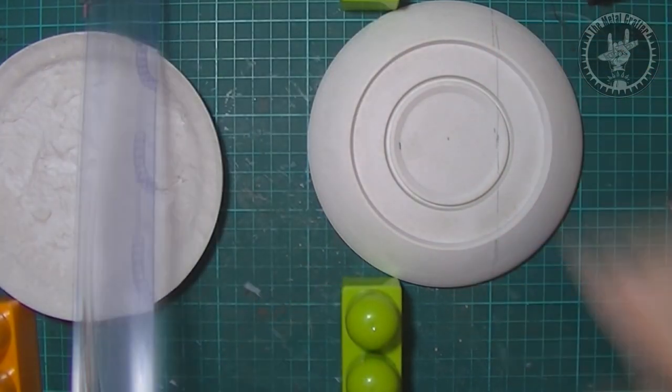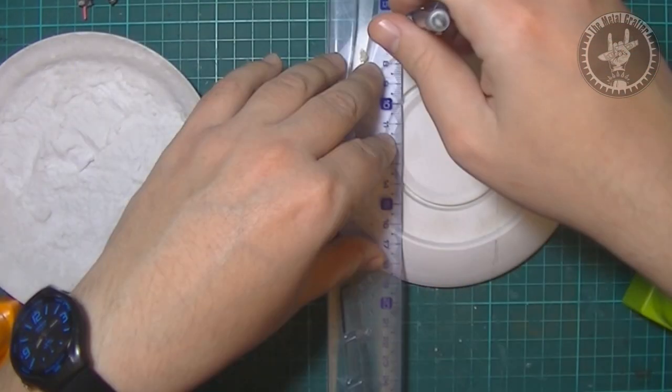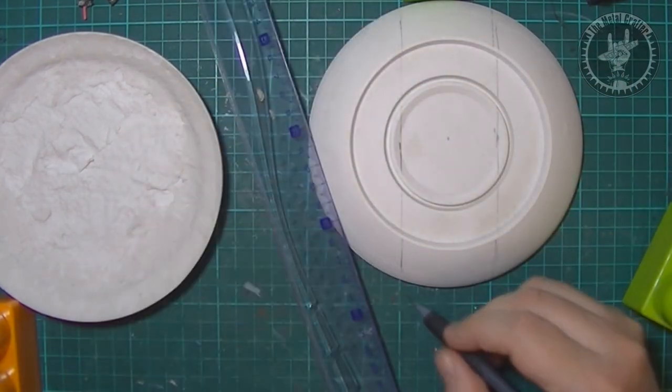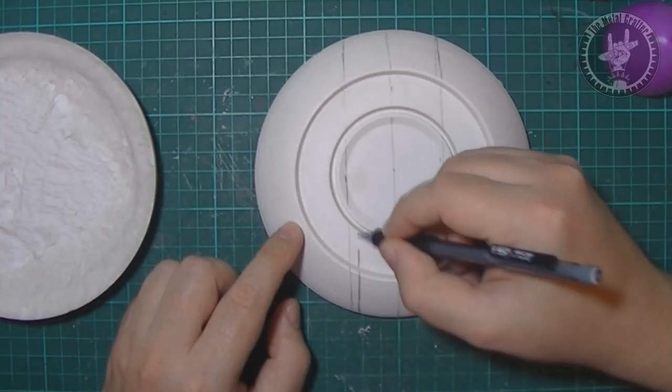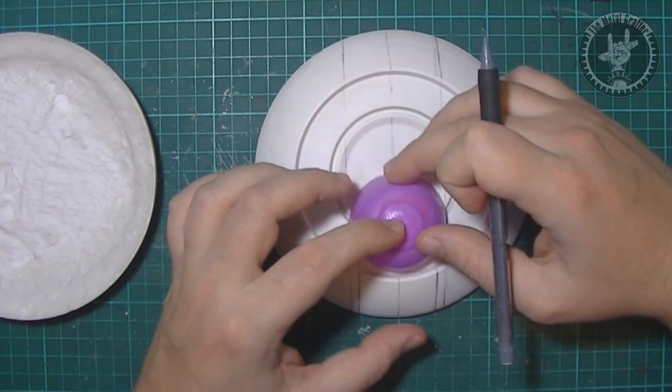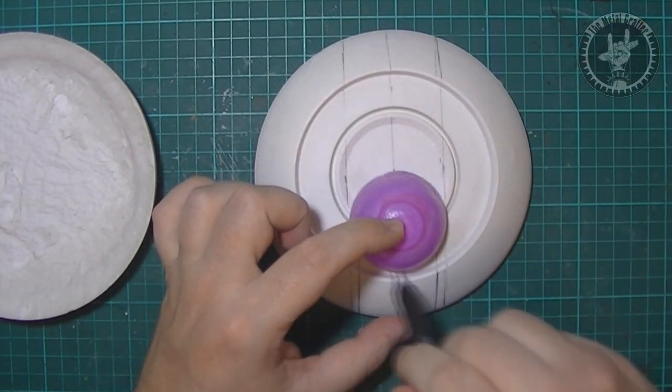I then started marking the body of the ship, to define middle points, where the cockpit would go, where flaps would be placed, etc. Used some plastic blocks as guides to get lines straight and even proportions.